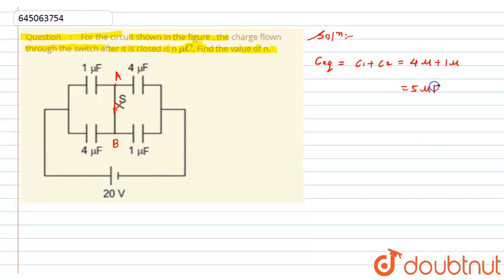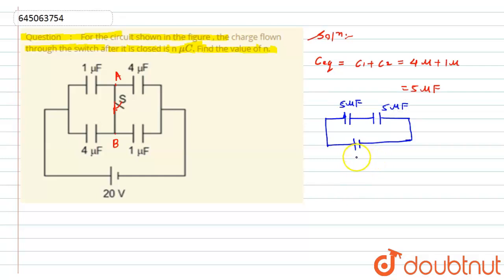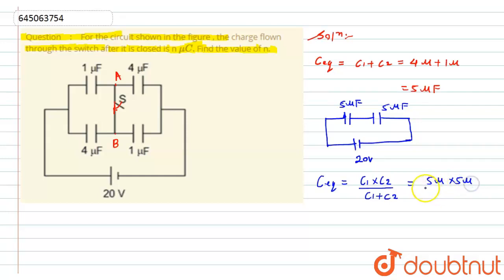The equivalent circuit can be drawn as a capacitor of 5 μF in series with a 5 μF capacitor, with a voltage source of 20 V across them. When capacitors are in series, the equivalent capacitance is C1 × C2 / (C1 + C2) = (5 × 5) / (5 + 5) = 25 / 10 = 2.5 μF.